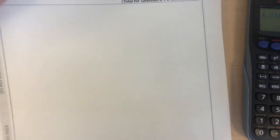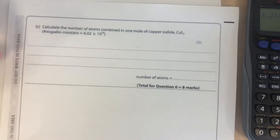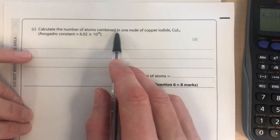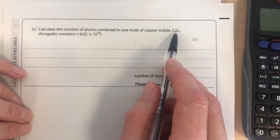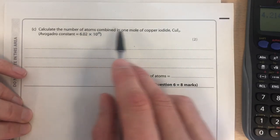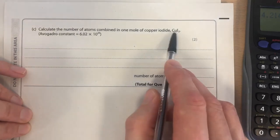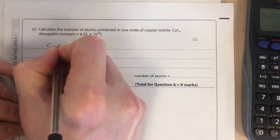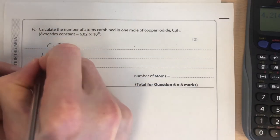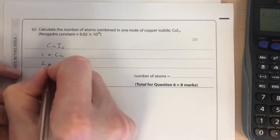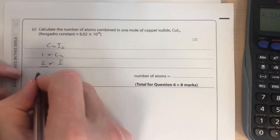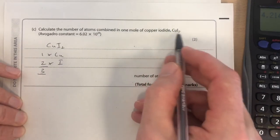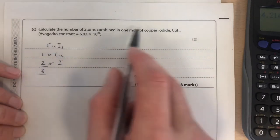Here is a sample exam question, I think it's coming from an Excel sample paper. Calculate the number of atoms combined in one mole of copper iodide, CuI2. It's given us this formula. So the number of atoms in one mole. How many different atoms do we have here? Well, we've got CuI2 is made of 1 times copper and 2 times iodine. So in other words, there's 3 atoms in total. So in one particle, or one unit of copper iodide, there's 3 atoms. So we've got 3 atoms in that.